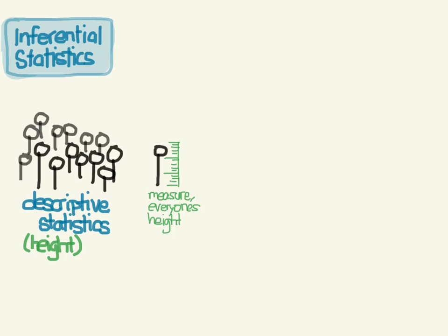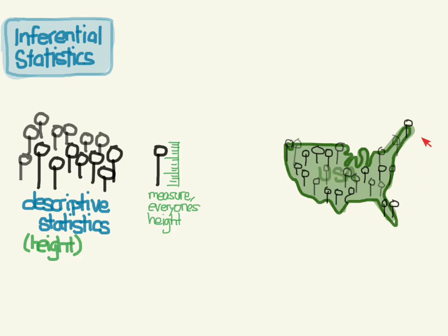Now let's say we want to know the average height of not just a small group of people, but everybody in the United States. This would be fairly difficult because there are about 300 million people. To get everyone's height measured would be cumbersome at the least and impossible most likely, because by the time you measured one person's height, maybe this person died and you'd have to remove them from your sample. It just would not be possible to do.